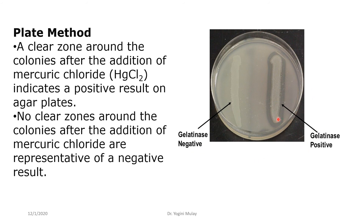For the plate method result interpretation: a clear zone seen around the colony after addition of mercuric chloride indicates a positive result, whereas no clear zone around the colony even after addition of mercury chloride represents a negative result. If tannic acid is used instead of mercury chloride as the reagent for detection of gelatin hydrolysis, the results are exactly reversed — instead of a clear zone, an opaque zone around the colony is considered positive, and the entire surrounding plate area will appear clear.